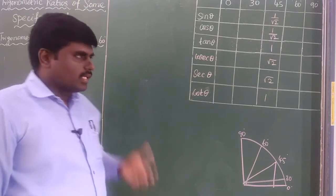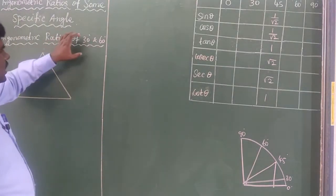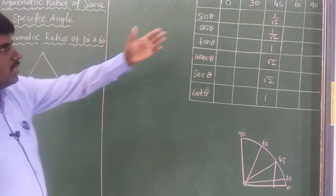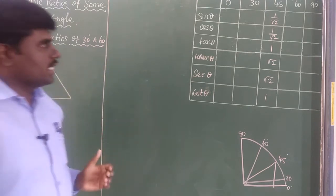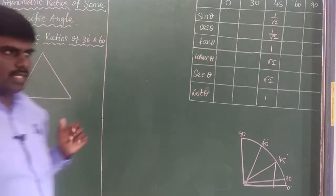Next we will see the trigonometry of 30 degrees and 60 degrees, so you can find out the 30 degree and the 60 degree values.